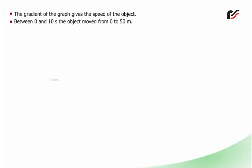A distance-time graph showing how a car travels 200 km: the gradient of the graph gives the speed of the object. Between 0 and 10 seconds, the object moves from 0 to 50 km. Speed = (50 m − 0 m) / (10 s − 0 s) = 5 m/s.